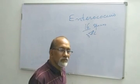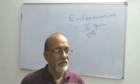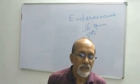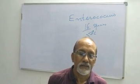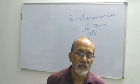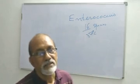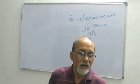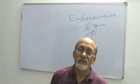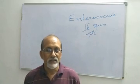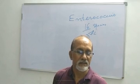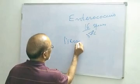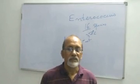Enterococci possess several distinctive features separating them from other streptococci. They grow in the presence of 6.5% sodium chloride, 40% bile, at a pH of 9.6, at 45°C, and in 1% methylene blue. Enterococci survive heating at 60°C for 30 minutes — a feature distinguishing them from streptococci. They also grow within a wider temperature range of 10°C to 45°C. They are pyrase test positive.